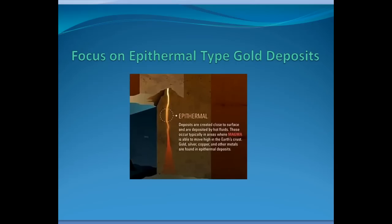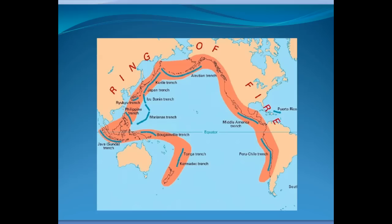Today we're going to focus on epithermal deposits because they're deposits created by magma — hot rock that comes near to the surface. They're famous for their gold and silver deposits and, to a lesser extent, copper and zinc and other metals, but they make some really amazing gold and silver deposits.